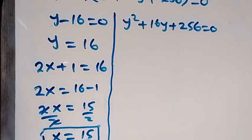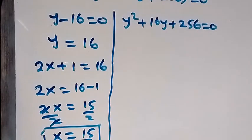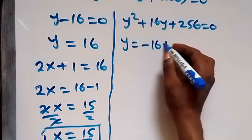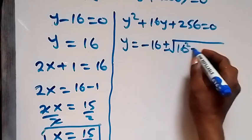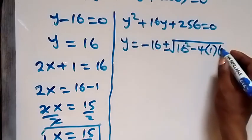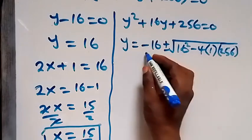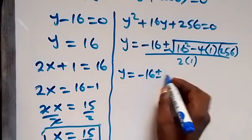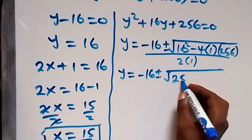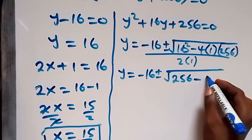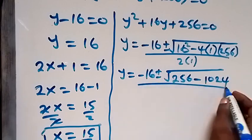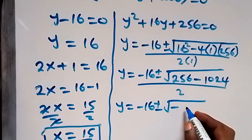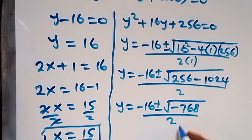On the other side, we solve y² plus 16y plus 256 equals 0 using the quadratic formula: y equals minus b plus or minus square root of b² minus 4ac, all over 2a. Here b is 16, a is 1, and c is 256. This becomes y equals minus 16 plus or minus square root of 256 minus 4 times 256, which is 1024, all over 2. So y equals minus 16 plus or minus square root of minus 768, all over 2.